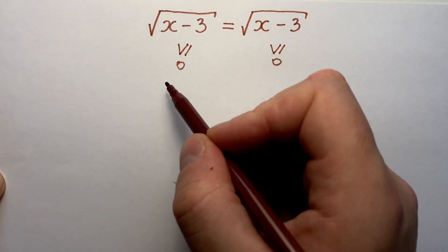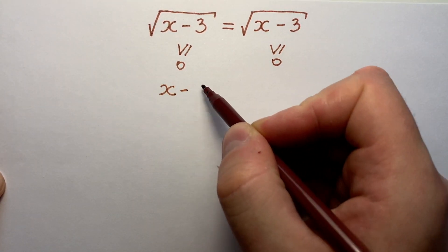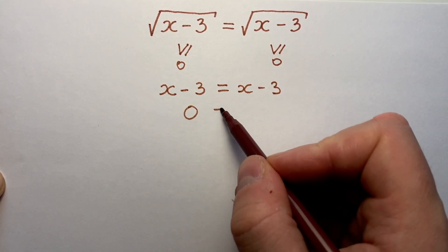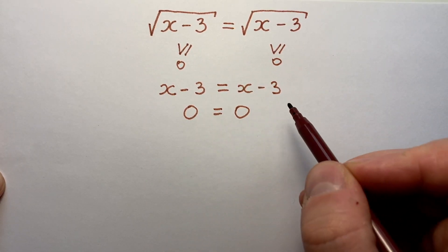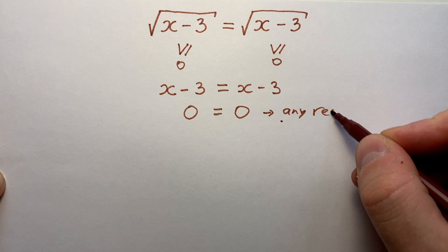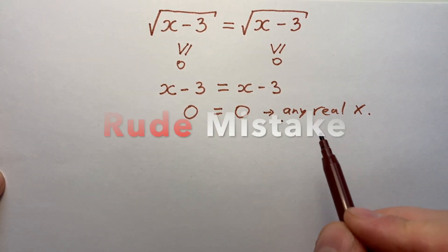They're squaring both sides of this equation and they get that x minus 3 equals x minus 3. Zero equals zero, and they say that the solution of this equation is any real x. But it's a mistake.